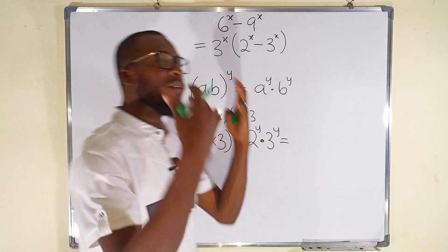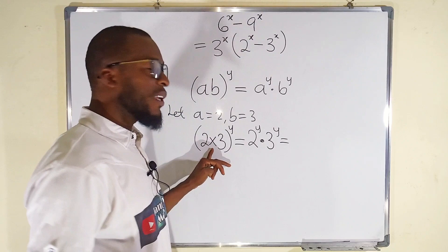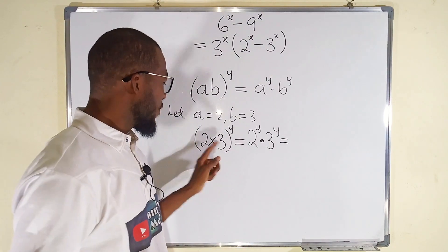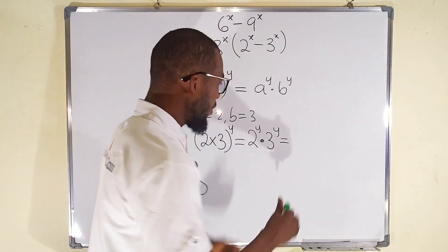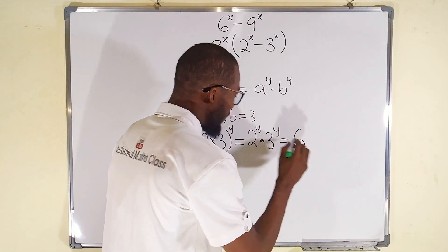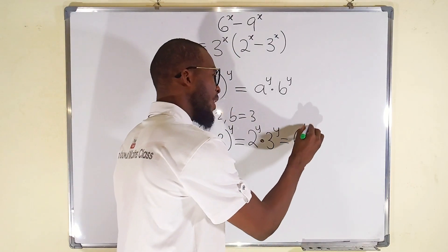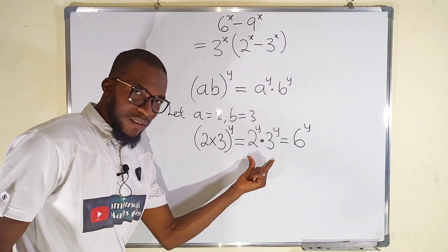But you know that from laws of arithmetic, we can simplify the bracket first if we like. So 2 multiplied by 3 gives us 6. This can also be written as 6^y, which means this is equal to this.